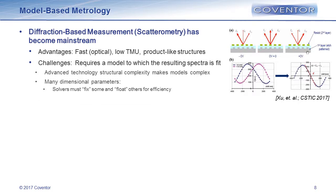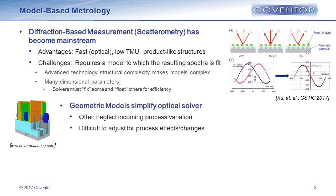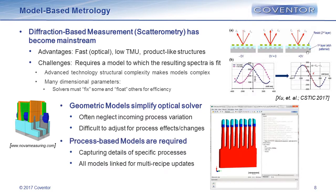I grabbed a model off the NOVA website — a company we've worked with. This is the type of 3D geometric model used in a scatterometry recipe to fit the spectra and determine geometric offsets. Because the structures are so complex, you have to simplify these models into a geometric scheme. By doing that, you neglect real process variation and incoming variation, and they're very difficult to adjust as you change the process through the flow. These models have to be simplified to get through the solver — you choose to fix some parameters and float others, which oversimplifies a lot of the process.